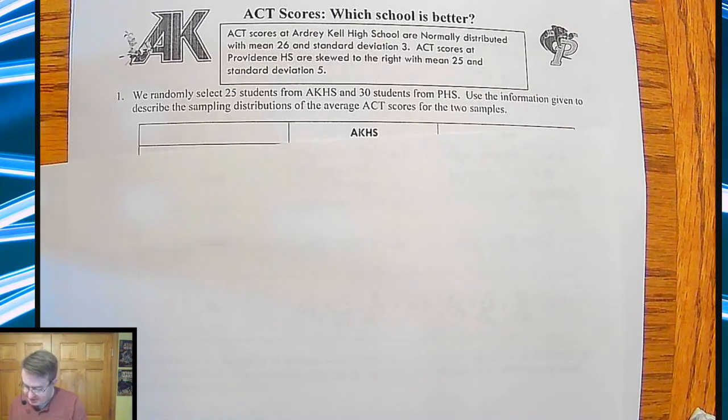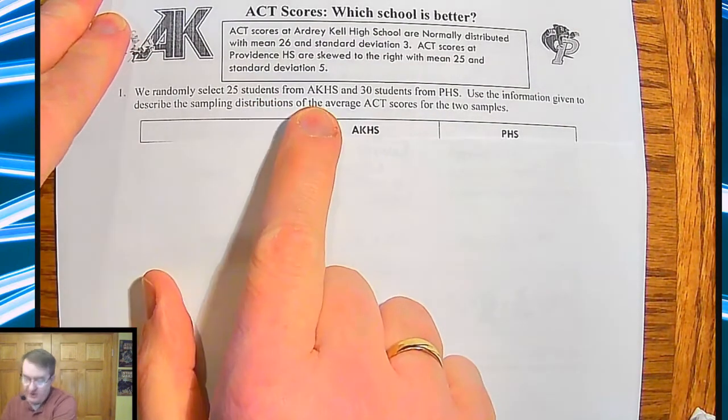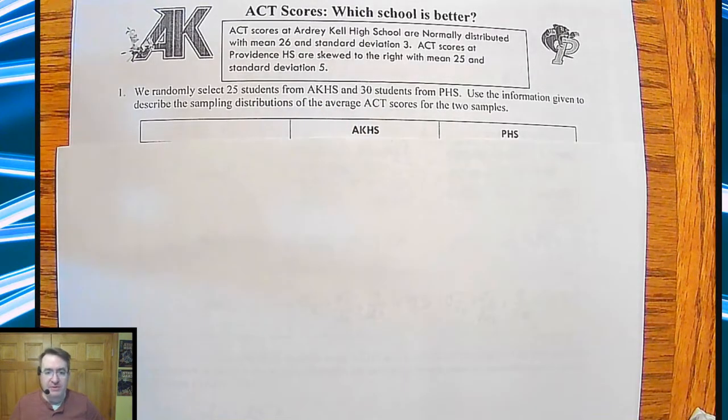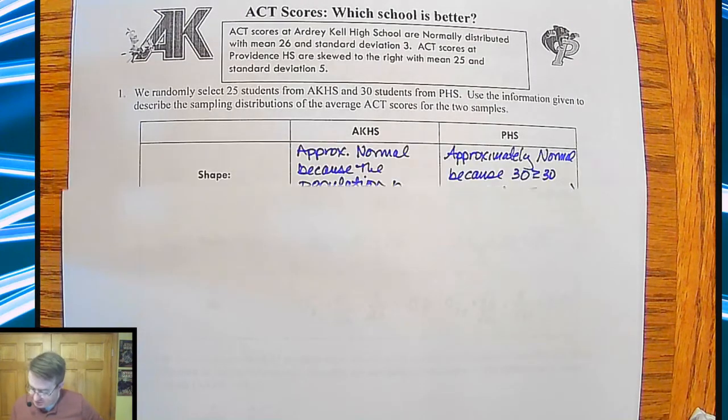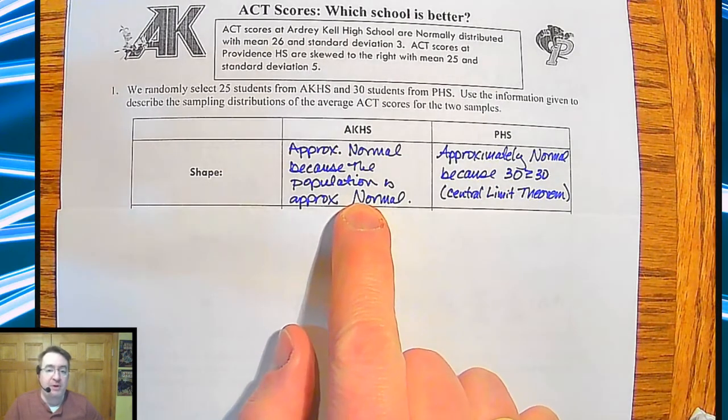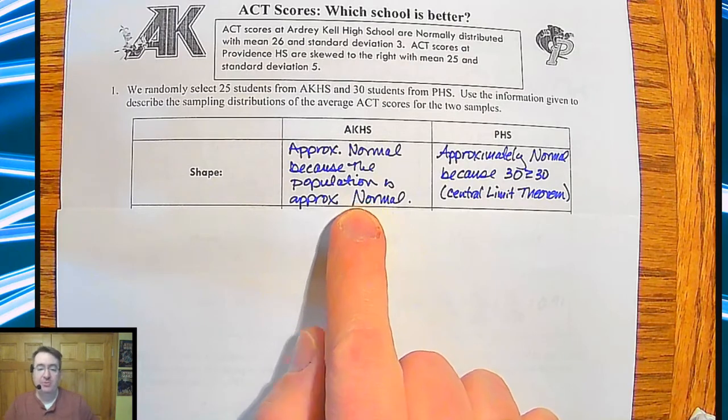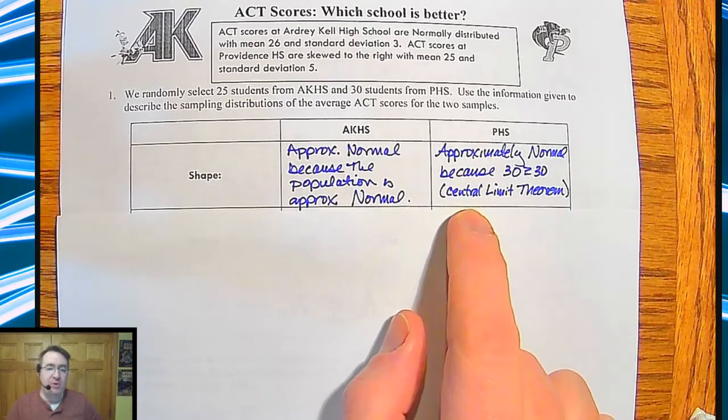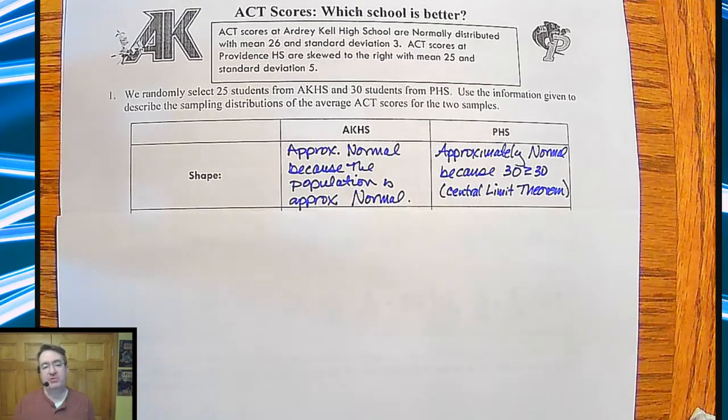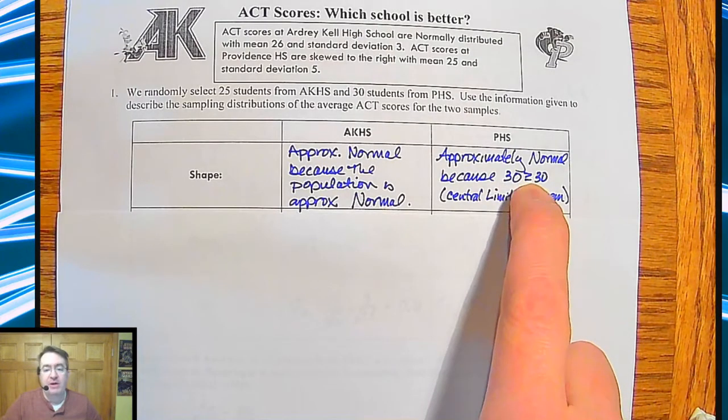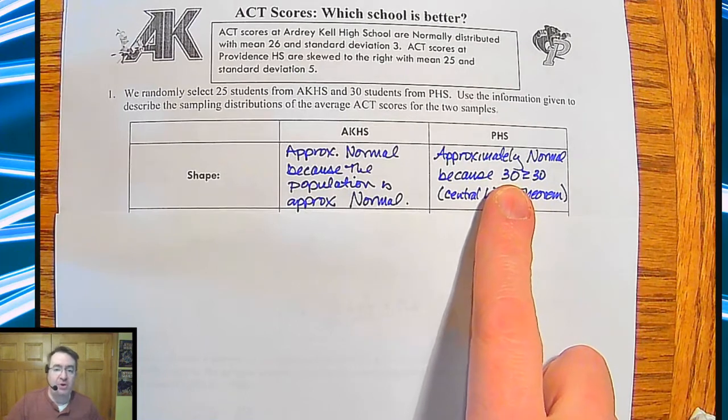So the first thing we're going to do is randomly select 25 students from AKHS and 30 from PHS. Use the information given to describe the sample distributions for both average ACT scores. So the shape: because AKHS has a normal population, we can assume that the sample distribution is also going to be approximately normal. And for PHS, even though it's skewed, by the Central Limit Theorem, as long as the sample is of sufficient size, we can say the distribution will be normal as well. And since 30 is greater than or equal to 30, then we can say this shape is also going to be normal.